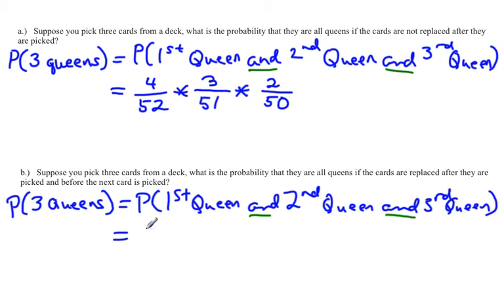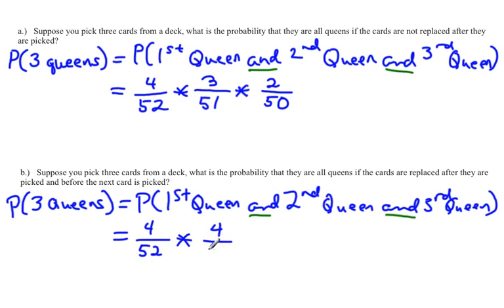We look at the probability the first card is a queen — again four queens out of 52 cards. When I see 'and,' I put a multiplication symbol. Now for the second card: the difference between this problem and the last is that we put the card back. So that queen is now back in the deck, meaning there are still four queens and still 52 cards. For the third card — again multiplication — we put that queen back too, so there are still four queens in the deck and still 52 cards.